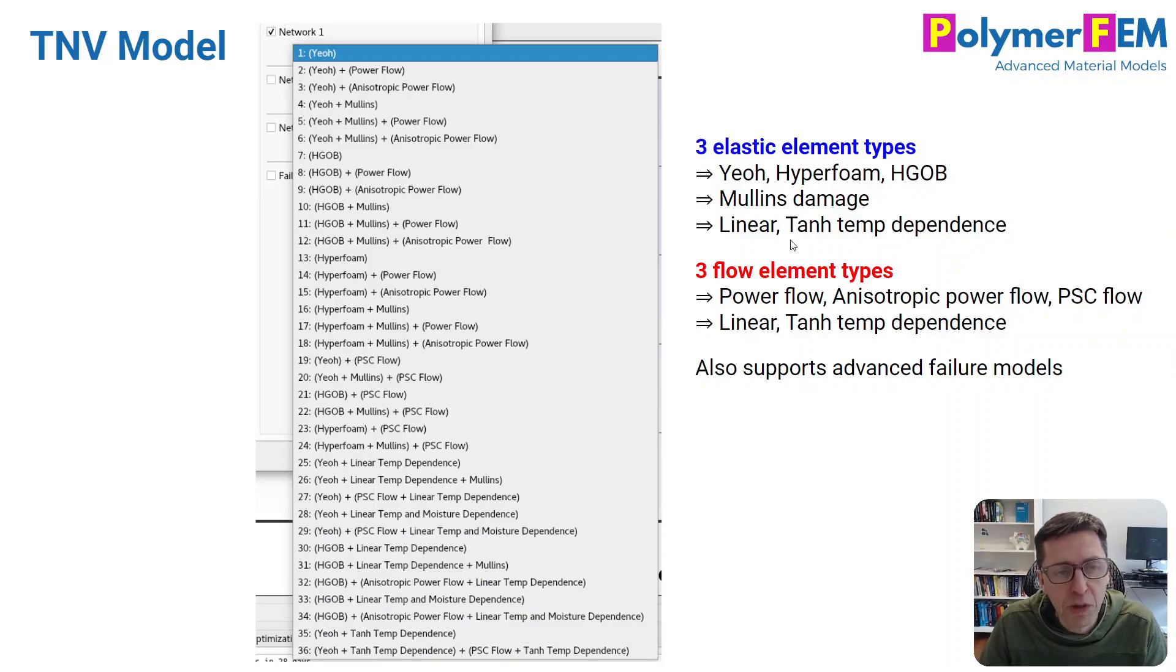Each of these can then also be combined with a flow element to give viscoplastic deformation capabilities. There are three types of viscoplastic flow element types: power flow, an anisotropic version of the power flow model, and another flow type they call PSC flow. Each of these can also be with linear or more non-linear temperature dependence. In addition to this, as I mentioned, there's failure that can be activated that I'm not going to talk too much about in this particular video.